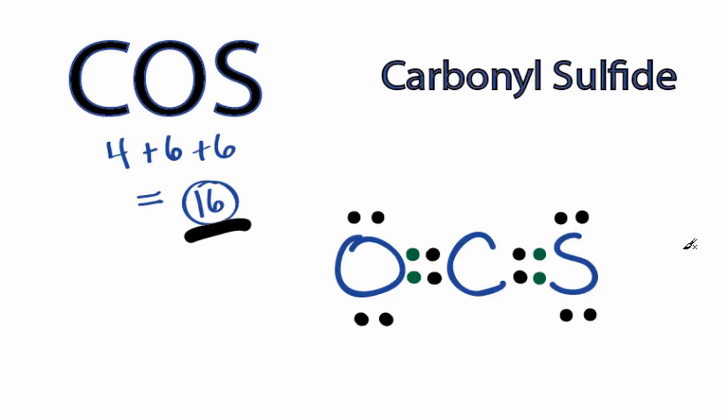Formal charges should be as close to 0 as possible. In the case with this structure here, they're all 0 for each of the atoms. This is Dr. B with the Lewis structure for COS. Thanks for watchin'.